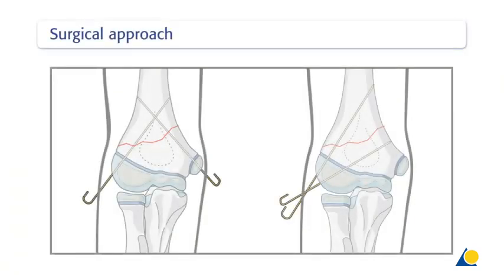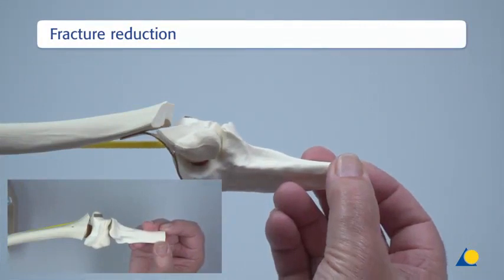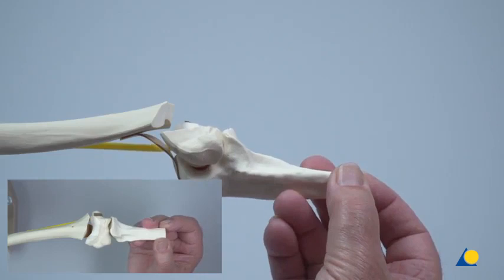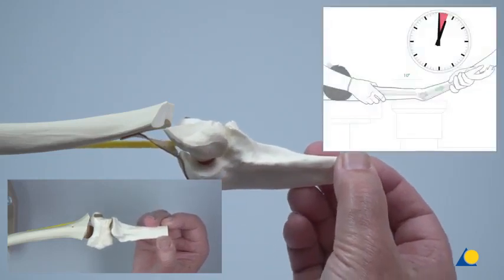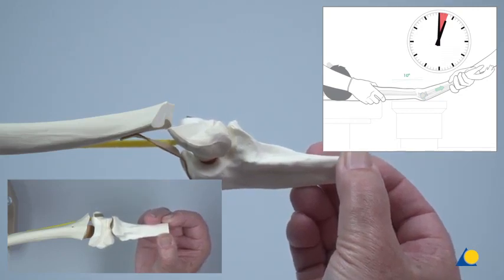The surgical approach to both the crossed bilateral 1.6 mm K-wire fixation and the divergent radial 2 mm K-wire techniques require stab incisions or a direct puncture with the guide wire at their respective entry points. In the clinical situation, closed reduction under image intensification would be performed on this type of fracture. With the humerus supported, the forearm along with the distal humerus fragment is pulled for 2 to 3 minutes.